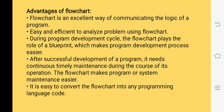During the program development cycle, a flowchart plays the role of a blueprint — it helps in the program development process and makes it very easy. After successful development of a program, the program needs maintenance and a flowchart makes program maintenance easy. It is also easy to convert the flowchart into any programming language code. Once we have drawn the flowchart, we can write the code in any programming language because we have already understood the logic, and when we understand the logic, we can write the program in any language.